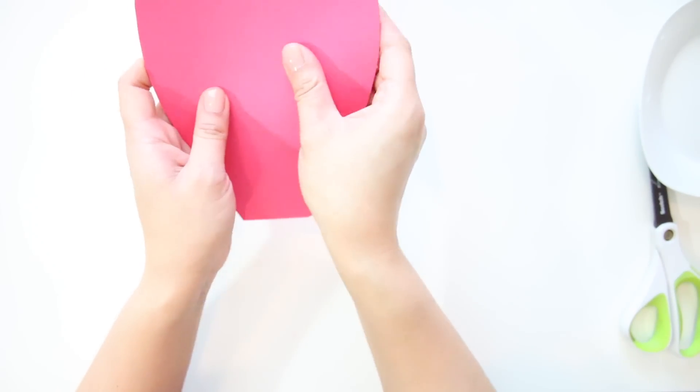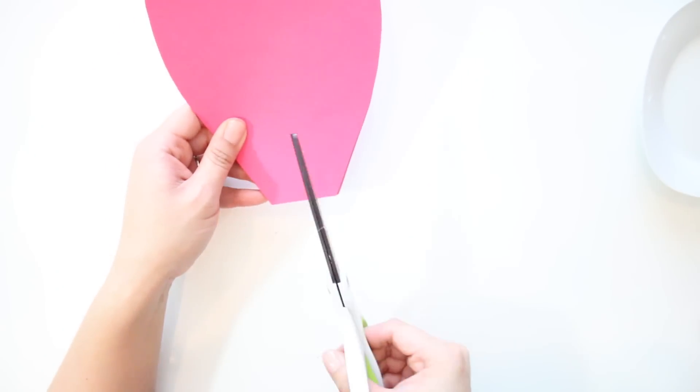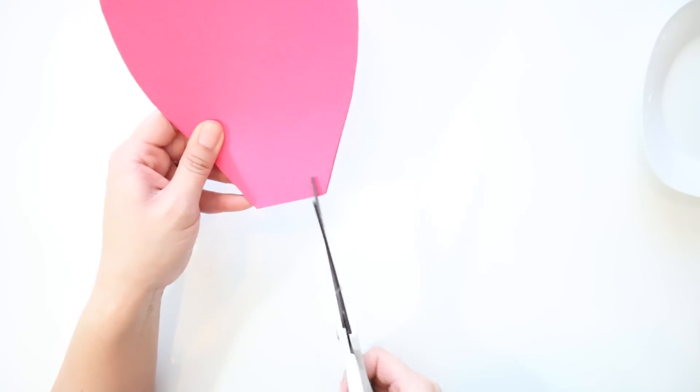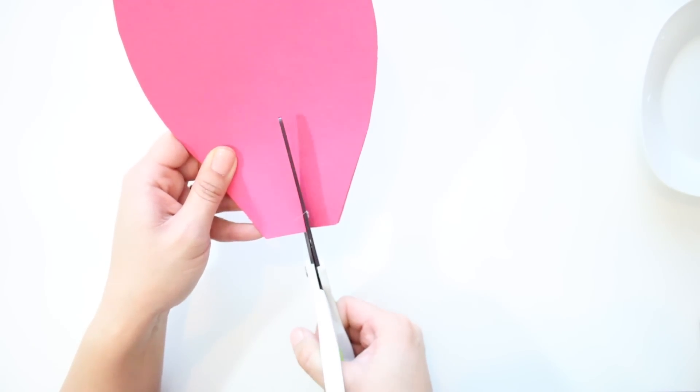At the base of the petal, cut a slit about 2 inches in. It should create 2 flaps.